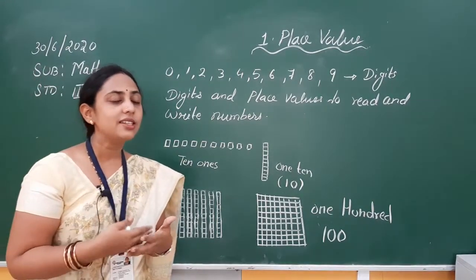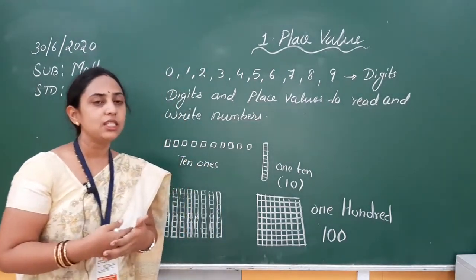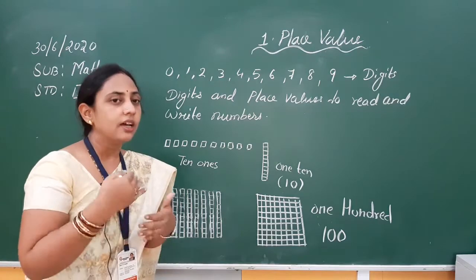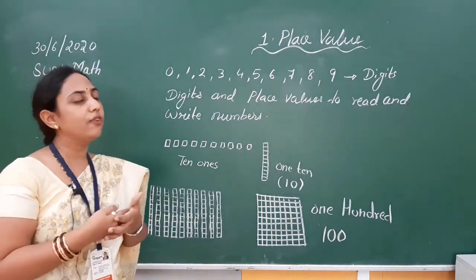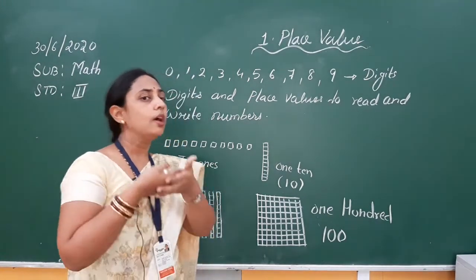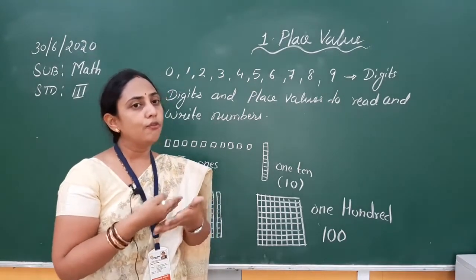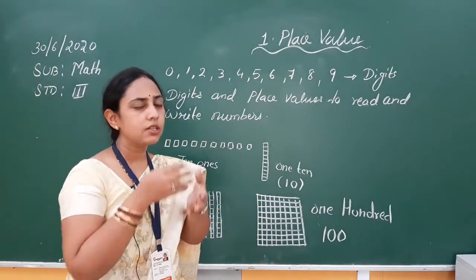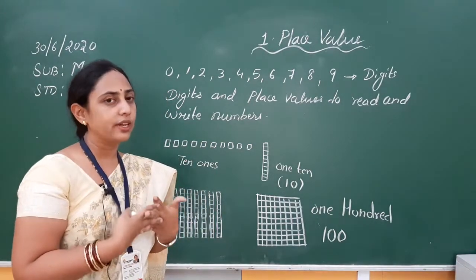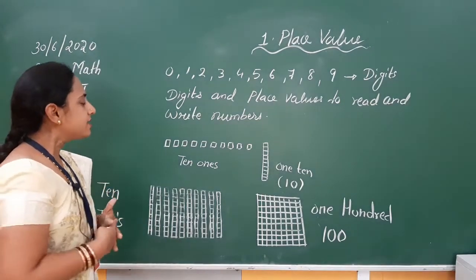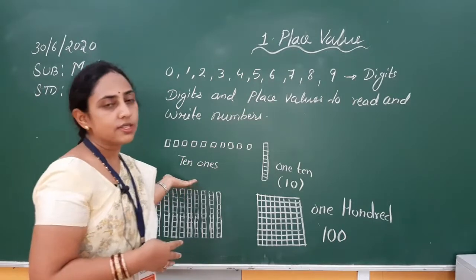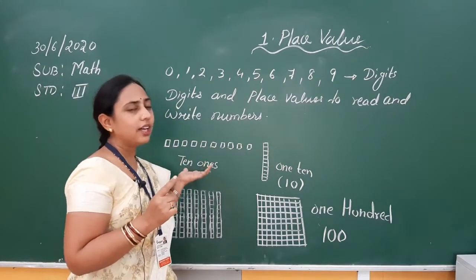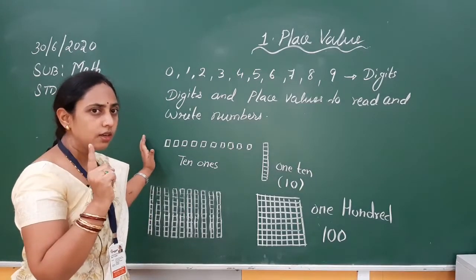We will use the digits and the place value of that particular number — that means where it is. The place where the particular number sits gives the value of that number. Generally, we will use this place value whenever we have to write or read any number. Just like you are in Jamnagar, there should be some place for that digit — that is called the place value. Now let us see: I have drawn 10 blocks here.